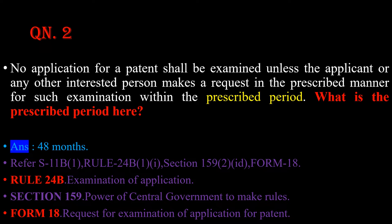Rule number 24b is examination of application. Section 159 is power of central government to make rules, and form 18 is request for examination of application for patent. Let us proceed.